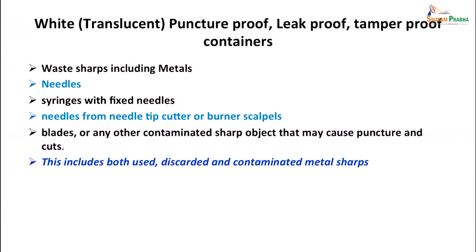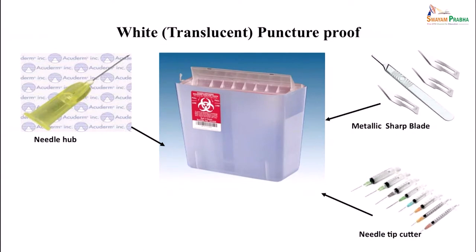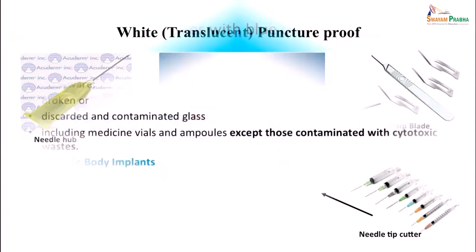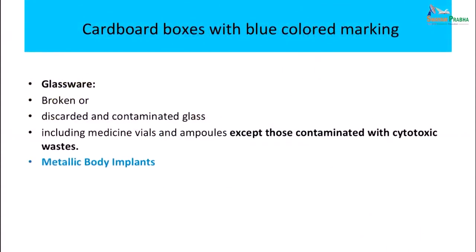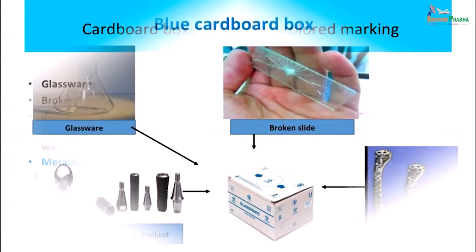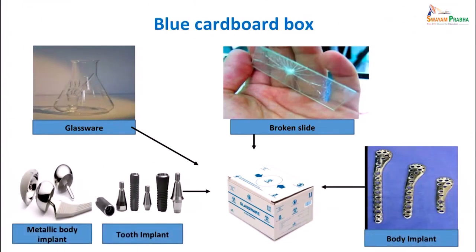White or translucent puncture-proof containers which should be leak-proof and tamper-proof contain waste sharps including metals — needles, syringes, needles from needle tip cutters, and blades — all of which have to be collected in the white translucent puncture-proof container. Cardboard boxes with blue-coloured markings are used to collect glassware, broken or discarded or contaminated glass including medicine vials and ampoules which could be contaminated with cytotoxic waste. Metallic body parts also which are part of the waste can be collected in the blue cardboard boxes with blue linings.